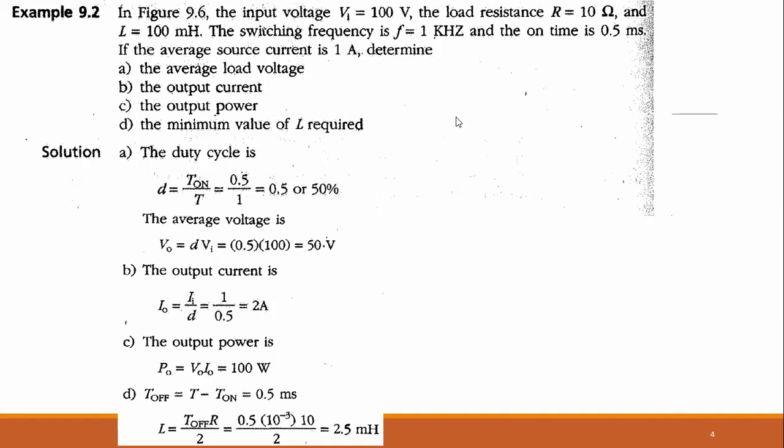The output current equals the input current divided by the duty cycle: I equals 1 divided by 0.5, giving 2 ampere. The output power equals output voltage times output current: 50 volts times 2 ampere equals 100 watts.